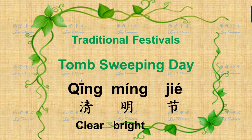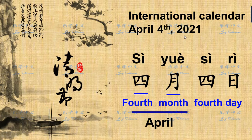In this time we memorize our ancestors, family, our friends, our heroes who sacrificed for the country, and people who have passed away. 清明节 is one of the four big festivals for Chinese people, and it's also a national holiday.